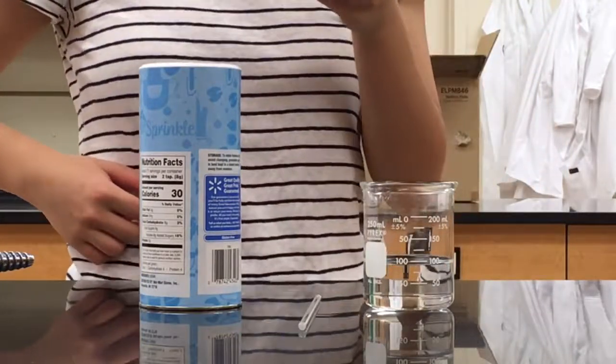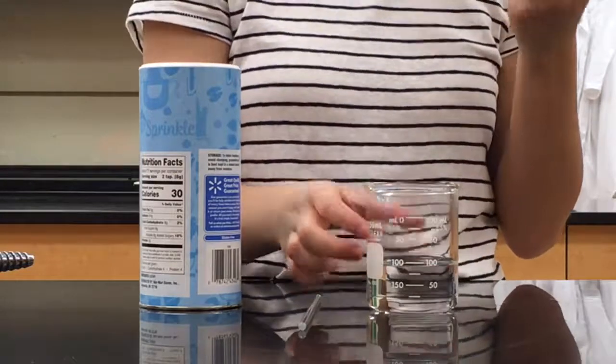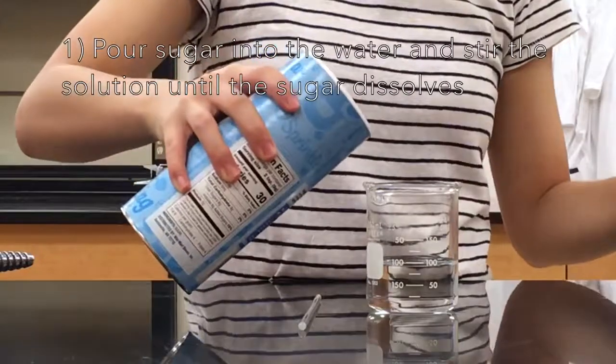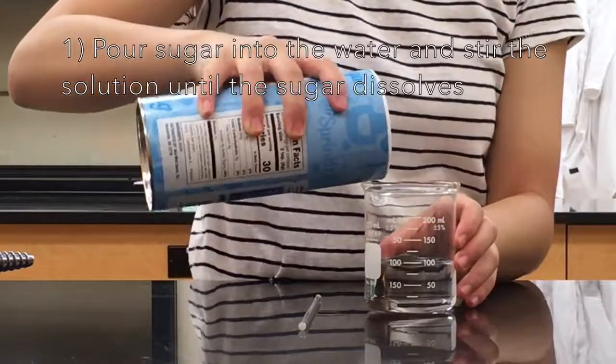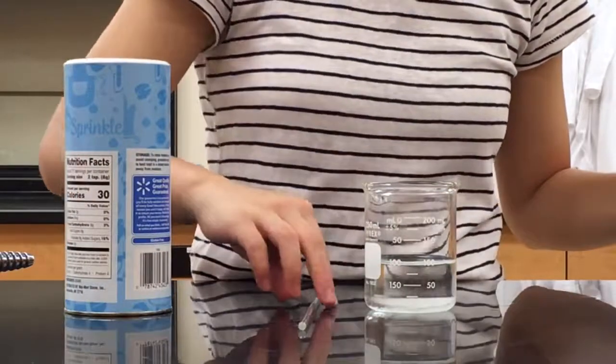So what you're going to first do is mark the level of water. You'll see on the markings from the beaker that it's 100 milliliters. And then what you'll want to do is just add some sugar to the beaker.